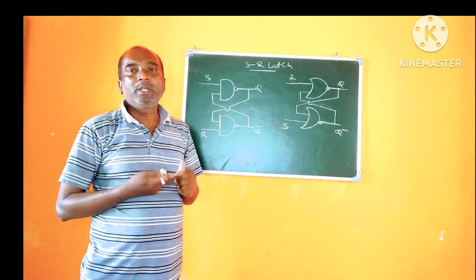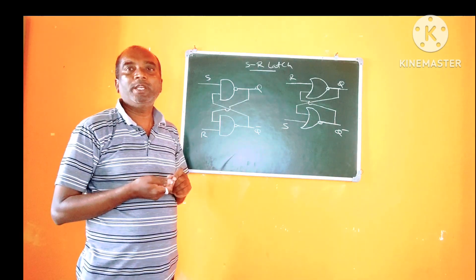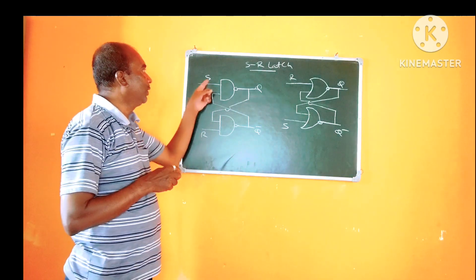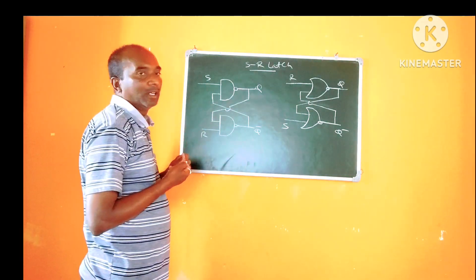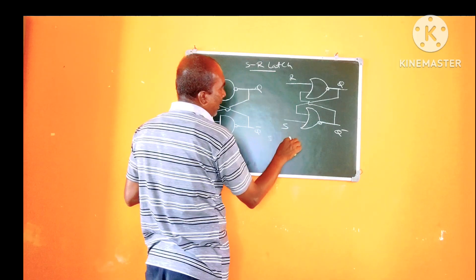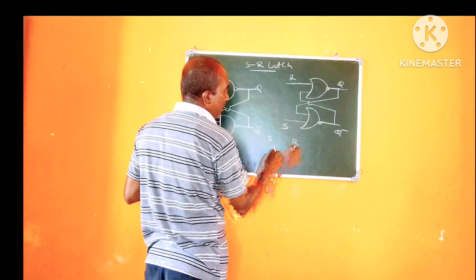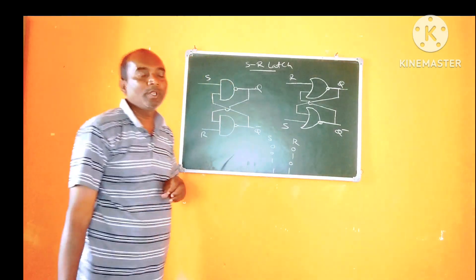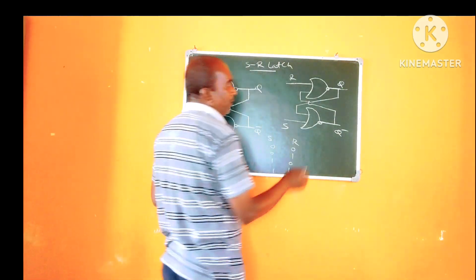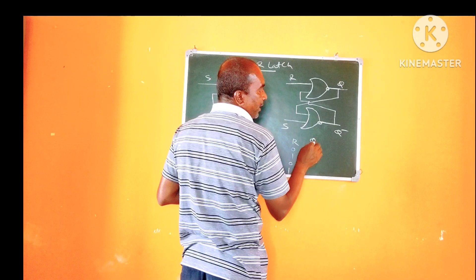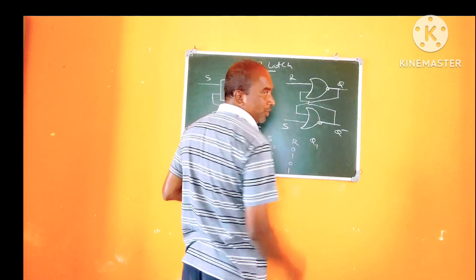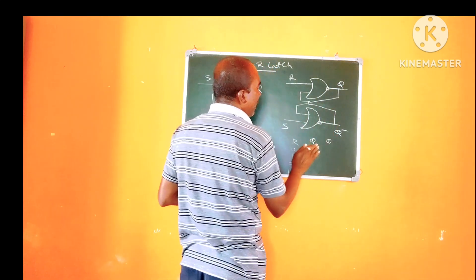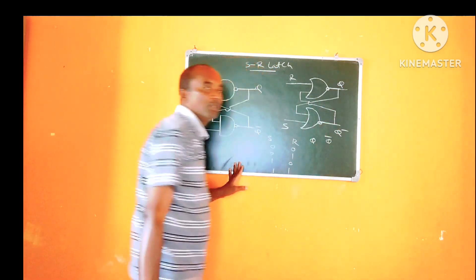I can give the explanation for the SR latch using a truth table. Here we are giving two inputs, S and R. The combinations may be 00, 01, 10, and 11. For each combination, we consider the present state QN and the next state QN+1, along with the output Q and Q-bar.